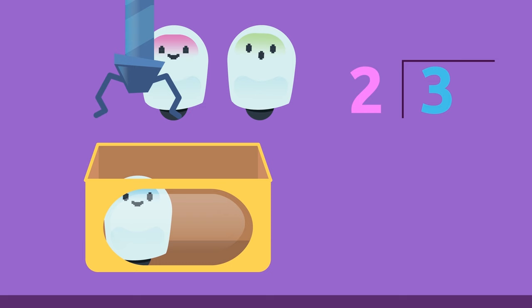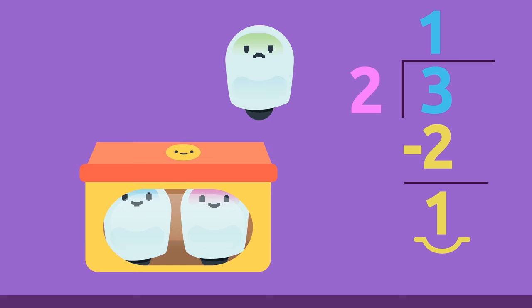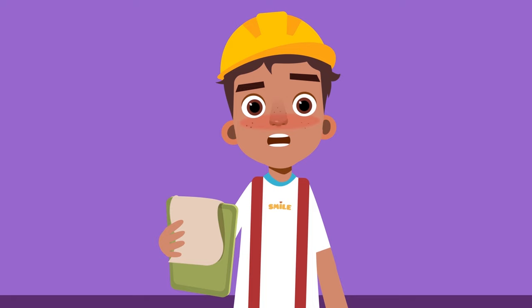For example, the number three isn't divisible by two, because if we divide three by two, the remainder isn't zero. Look — the remainder is one.